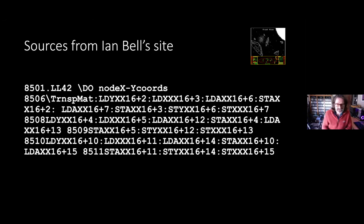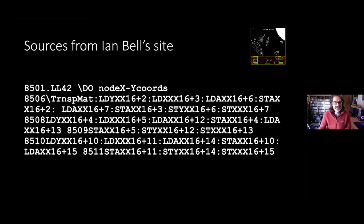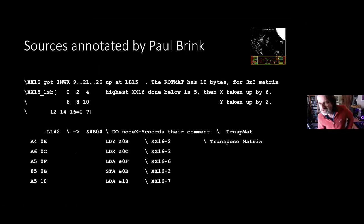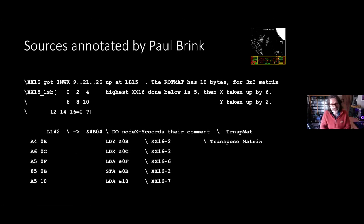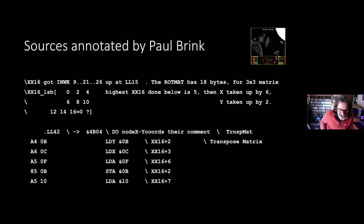A little bit later, I was really pleased to bump into an annotated disassembly of the disc version of Elite that Paul Brink put together, which was again on Ian Bell's site. It was sort of an improvement, but I still sat down with a cup of tea and tried to work out what was going on and still had no idea. This bit on screen is probably one of the most documented parts of that source code, and it's quite confusing — a bit like a cryptic crossword.